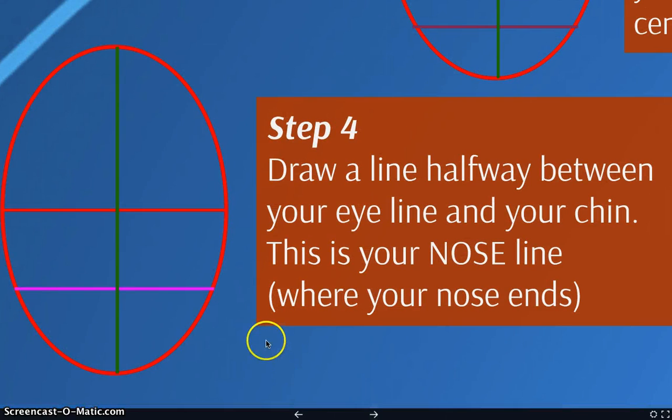Step four. Now you're going to draw a line halfway between that eye line and your chin line. So this line is halfway between your eyes and your chin, and it is your nose line. It is where your nose ends. It's the bottom of your nose. Your nose is much longer than you think it is.